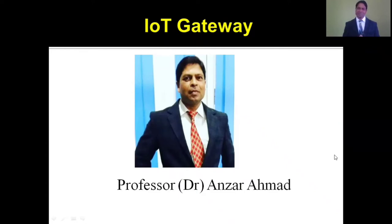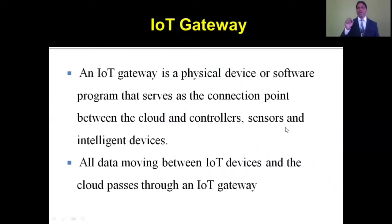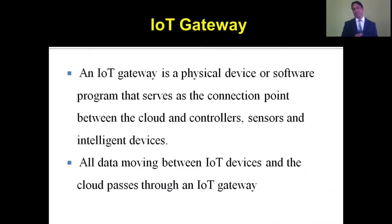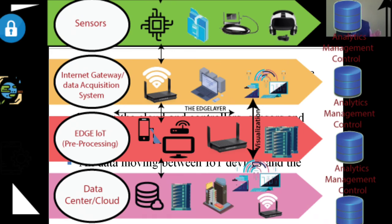An IoT gateway is a physical device or software program that acts as the connection point between the cloud and controllers, sensors, and intelligent devices. As the name indicates, it's the gateway between the first stage and the further stage — the third stage, which is called pre-processing or edge IoT.